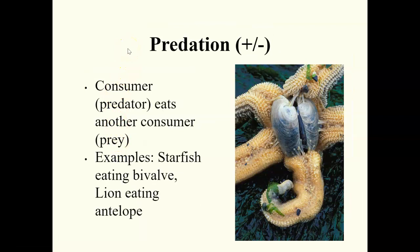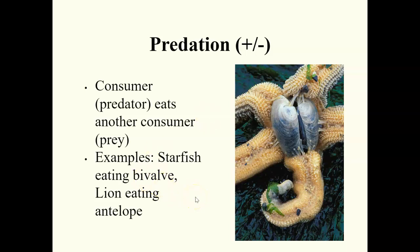Predation is a positive/negative relationship where a predator eats another consumer — the prey. In the picture, there's a starfish eating a bivalve, which is any two-shelled organism like a clam, mussel, or scallop. The prey is harmed and the predator benefits. Other examples include carnivores eating their prey, like a lion eating an antelope or a hyena feeding on a zebra.